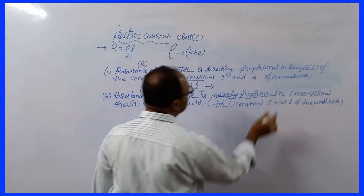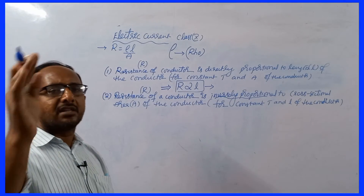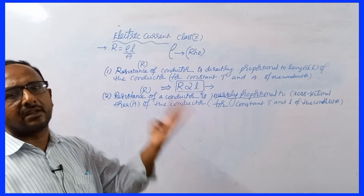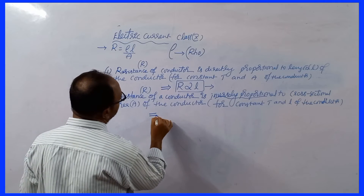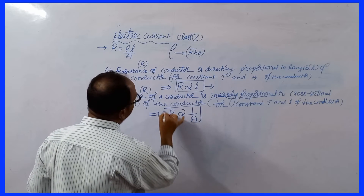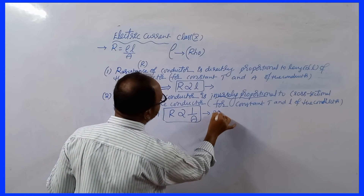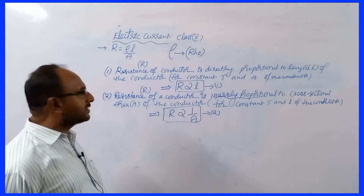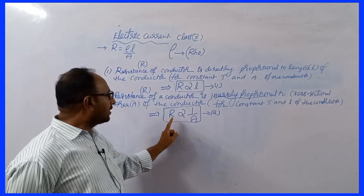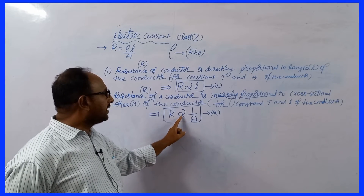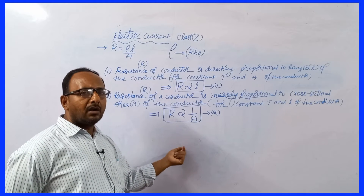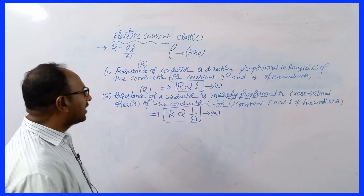Inversely proportional means when one quantity increases, another quantity decreases. So this can be written as R is inversely proportional to A, or equivalently, R is directly proportional to 1 by A. This is equation 2.